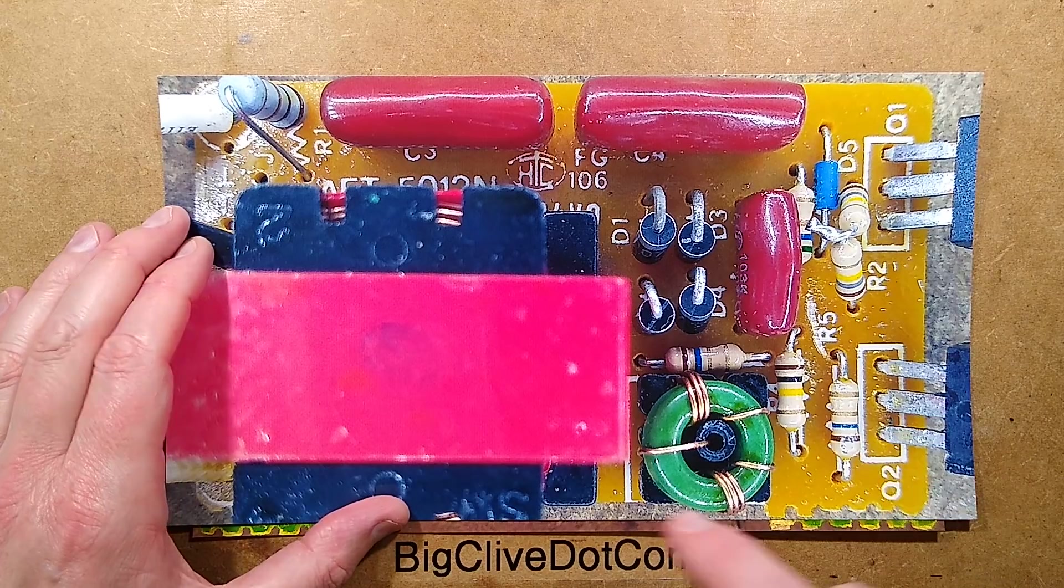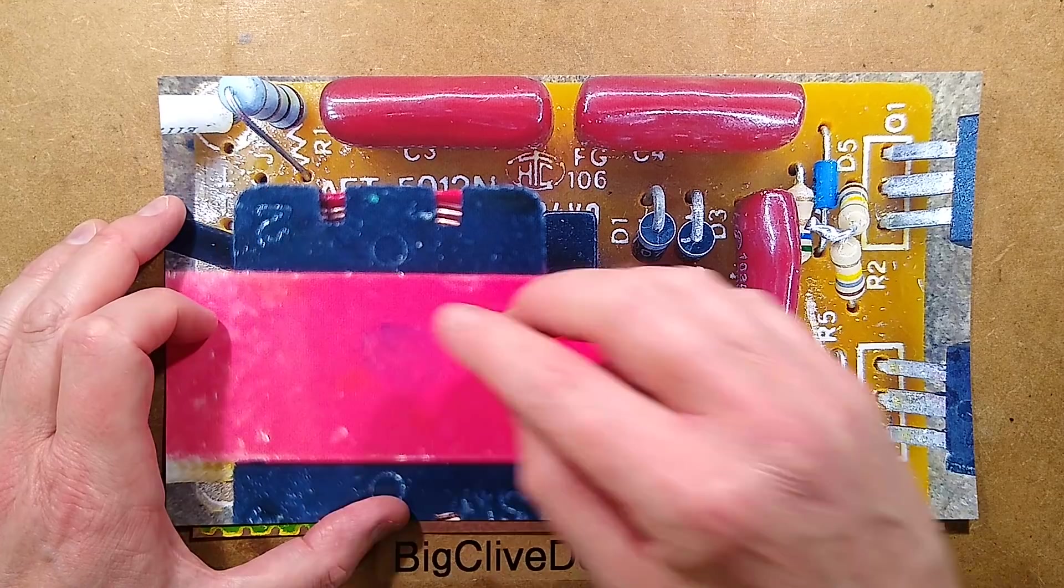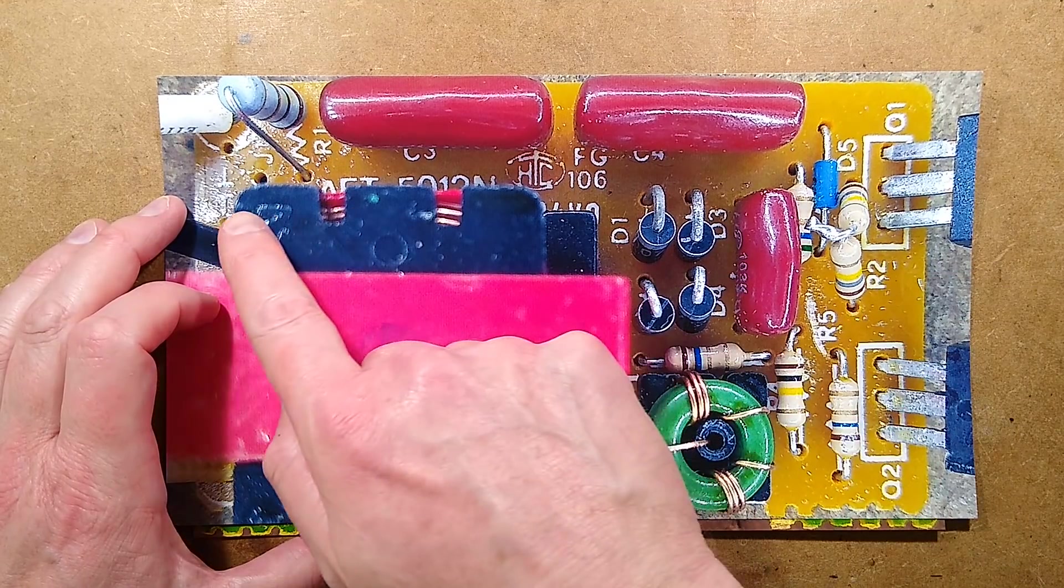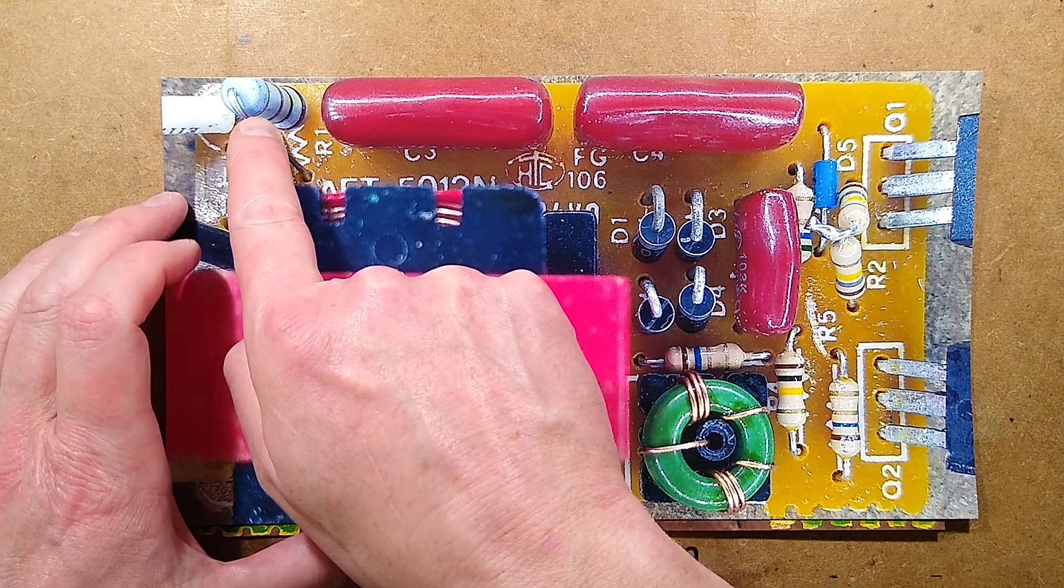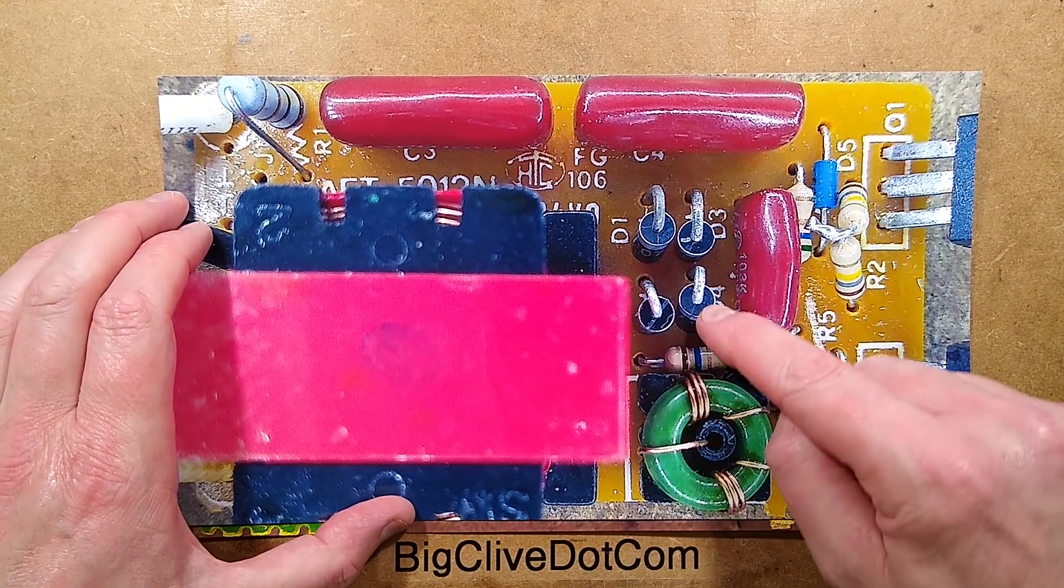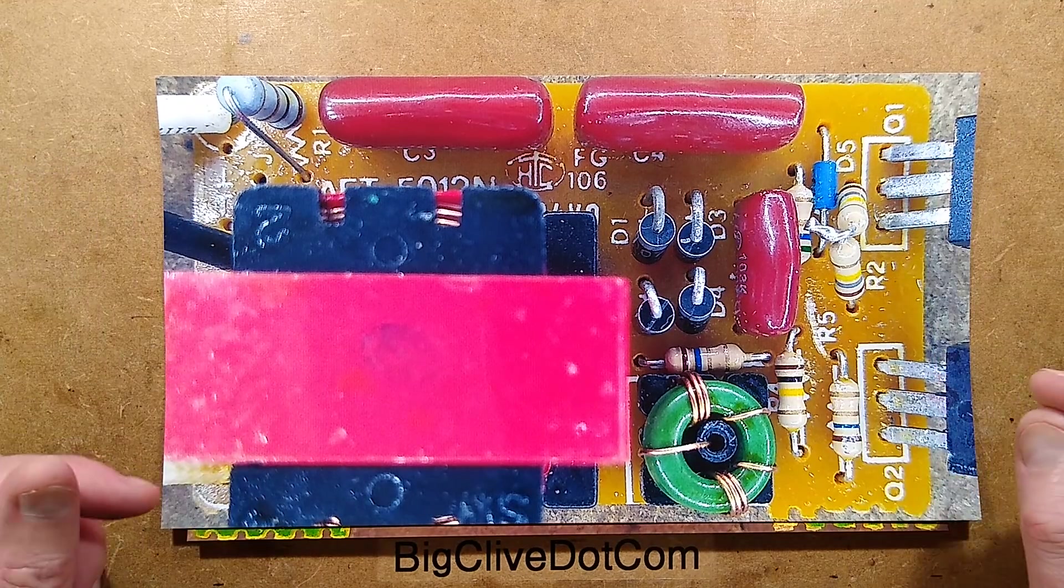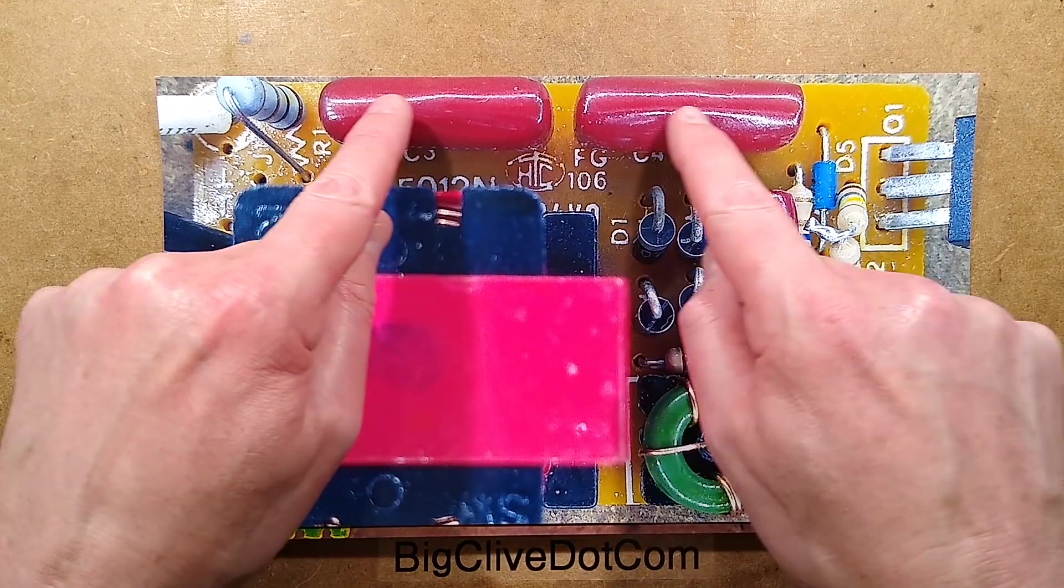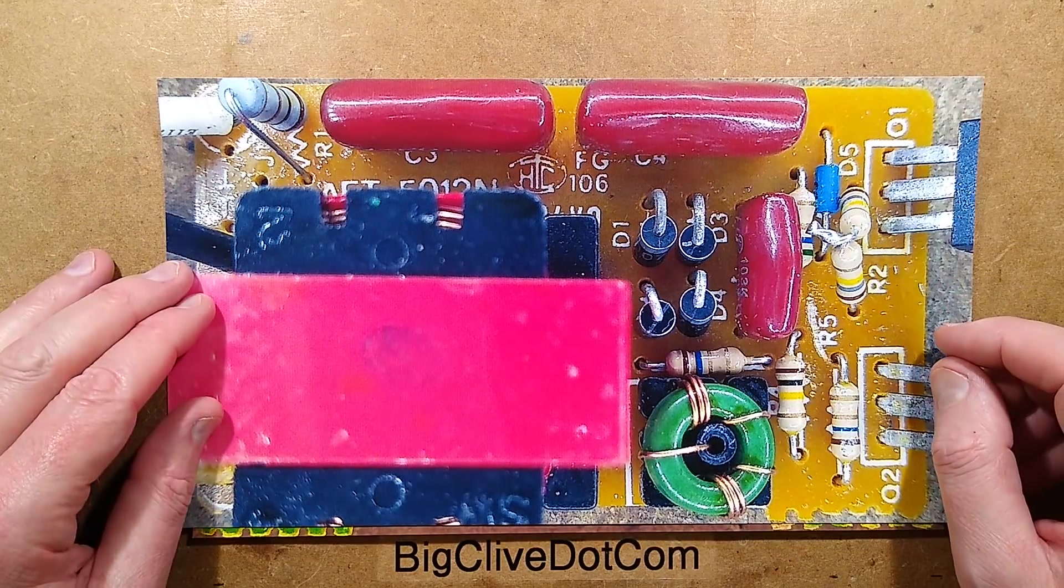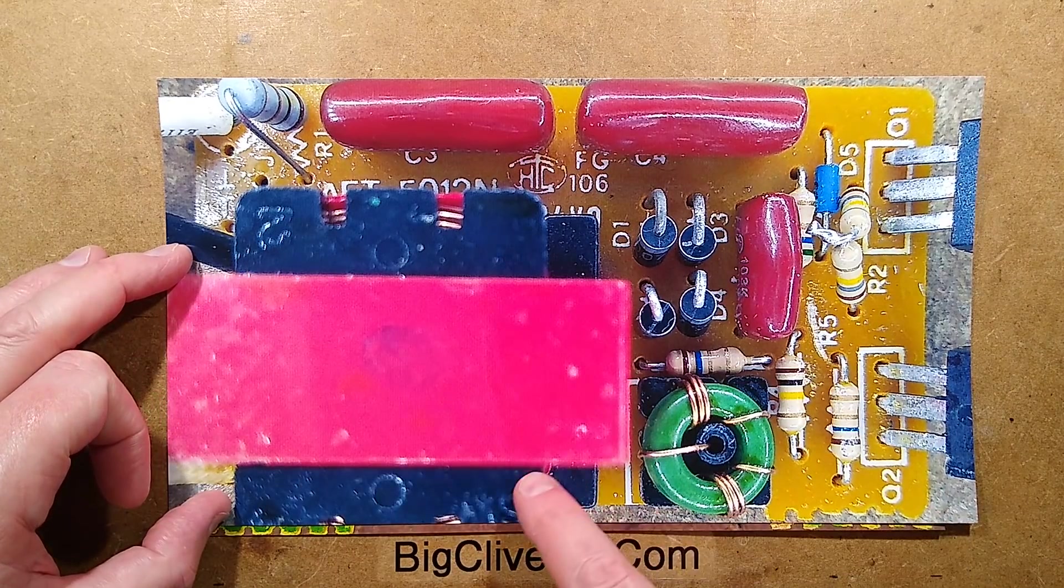Components worthy of note: the incoming supply has a 1 ohm fusible resistor that limits inrush. It then goes across to a bridge rectifier based on four discrete diodes. There is no smoothing, there are two transistors, there are a bridge of capacitors, there's a little feedback core here.